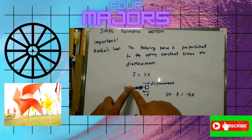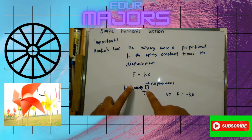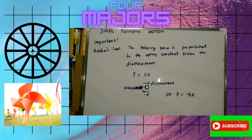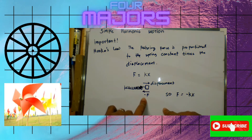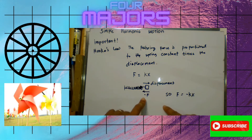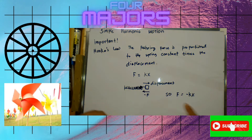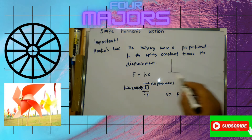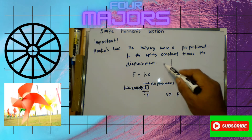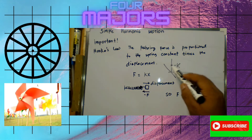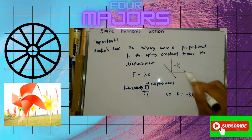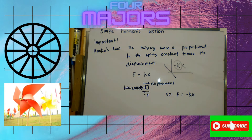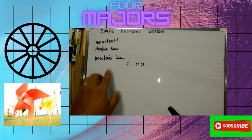The restoring force acts to return the object to its initial position, so the force is opposite to the displacement. That is why there is a negative sign in the formula. On a force-displacement graph, it is a linear graph where negative k is the slope, which is why it falls from left to right.